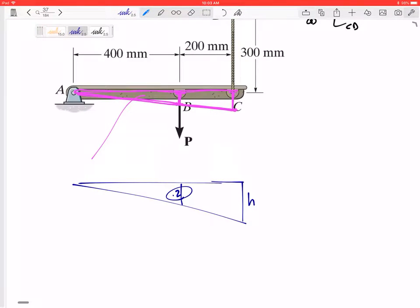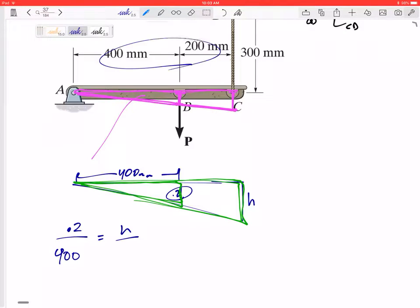I'm gonna say that this 0.2 over 400—this triangle right here is the same or similar to this large triangle right here. So I'm gonna say 0.2 over 400 equals H over this whole 600.